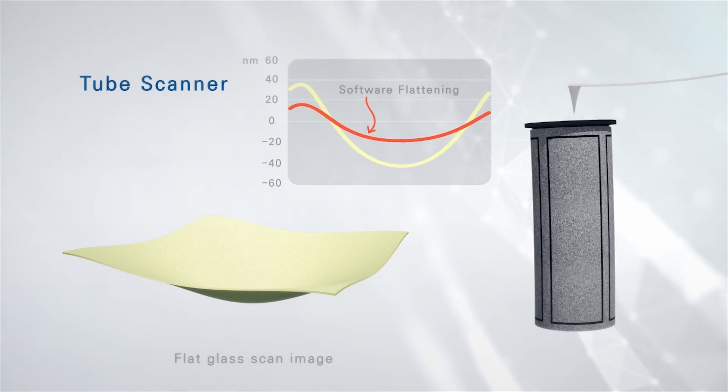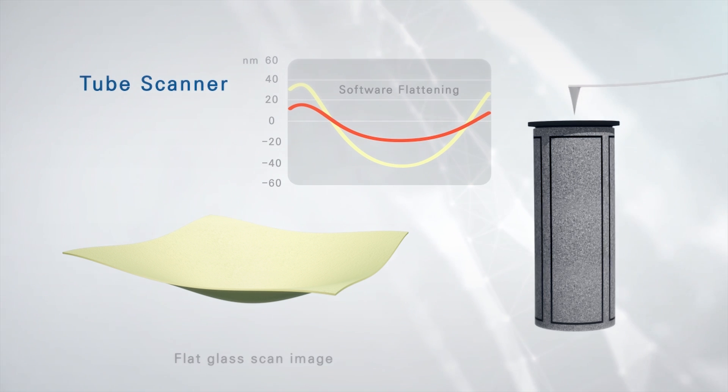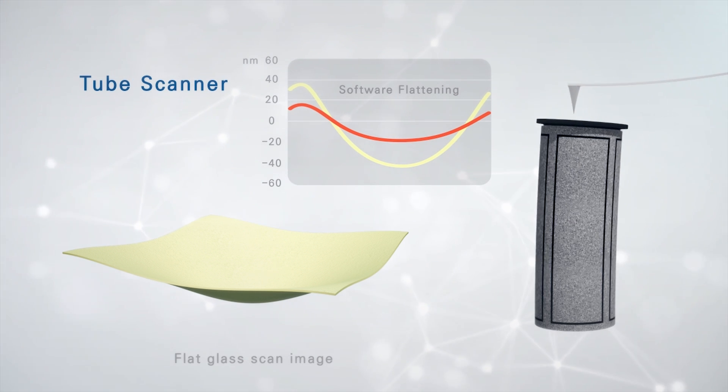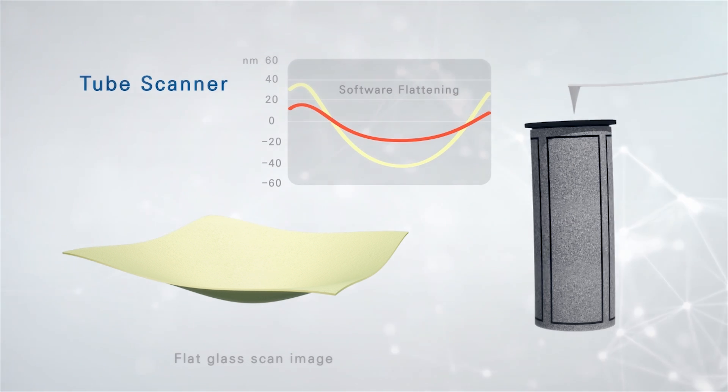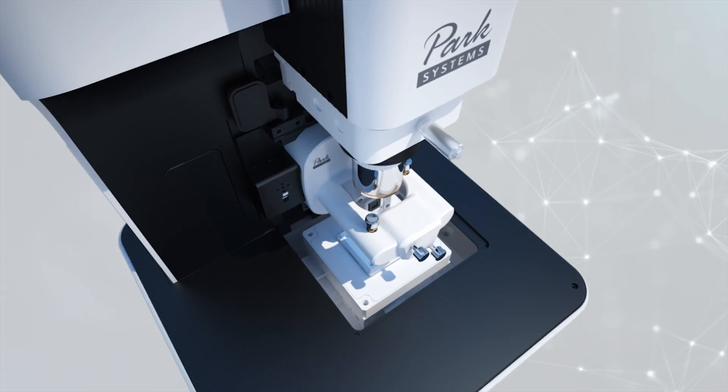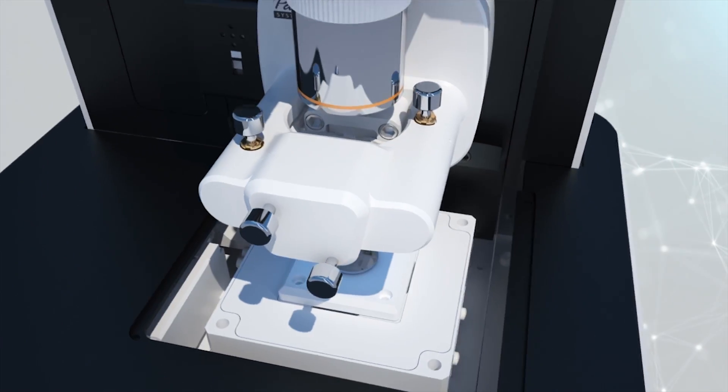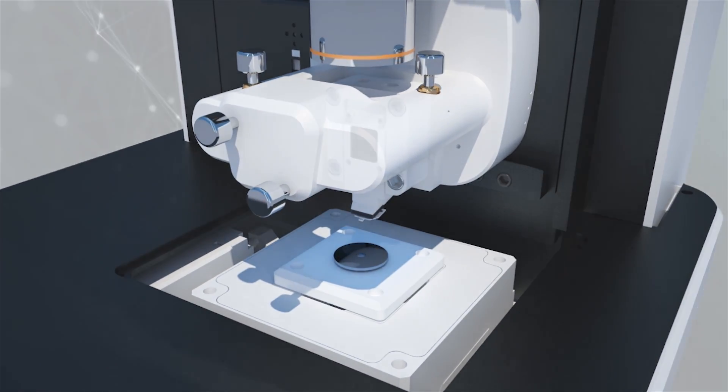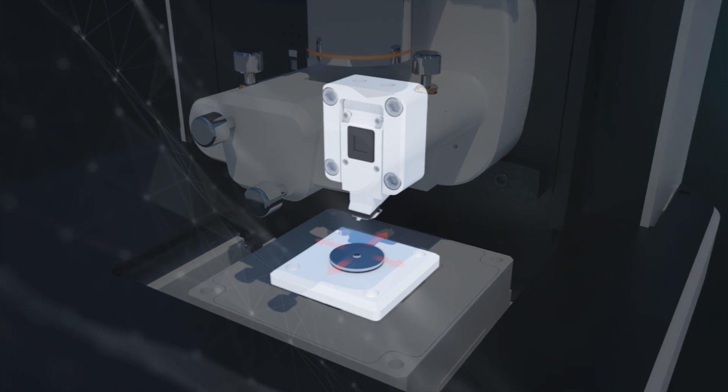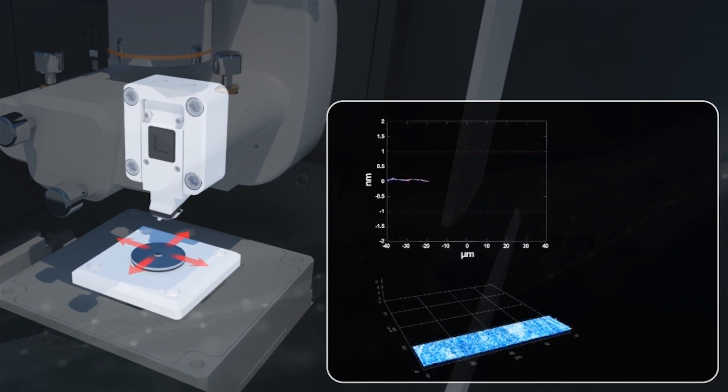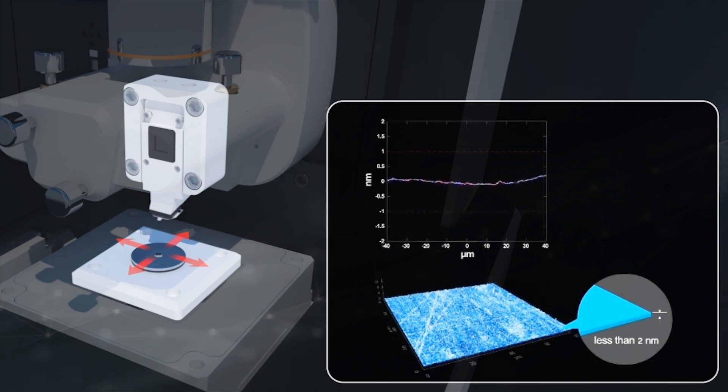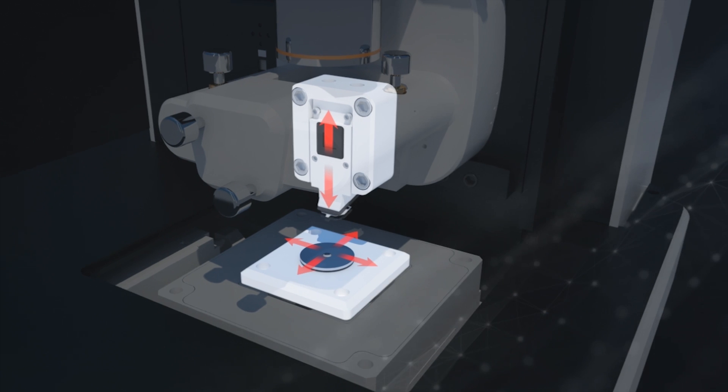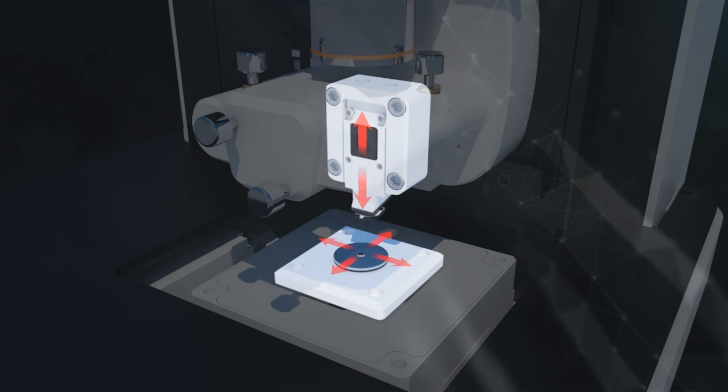In contrast, the decoupled scanner design developed by Park Systems consists of flexure-based independent XY and Z scanners so that measured images can be free of distortion and excellent in linearity and orthogonality regardless of scanning range or sample size and at any scan location or speed.